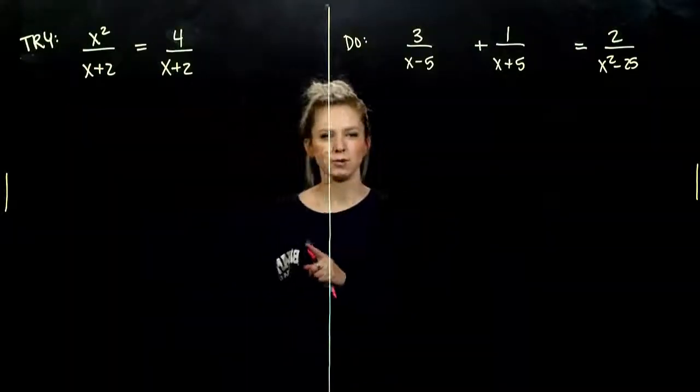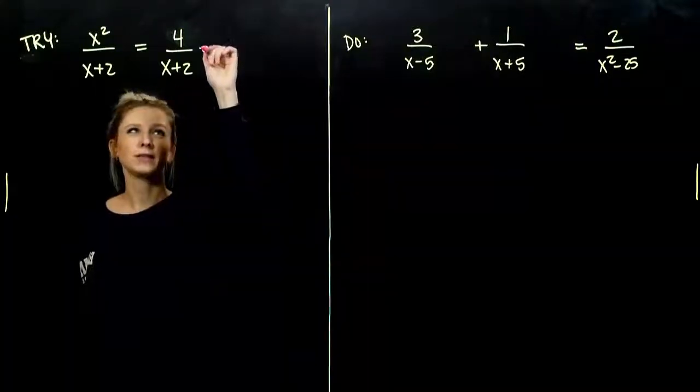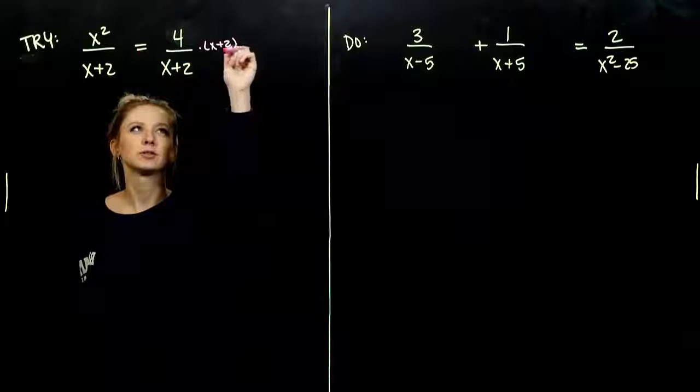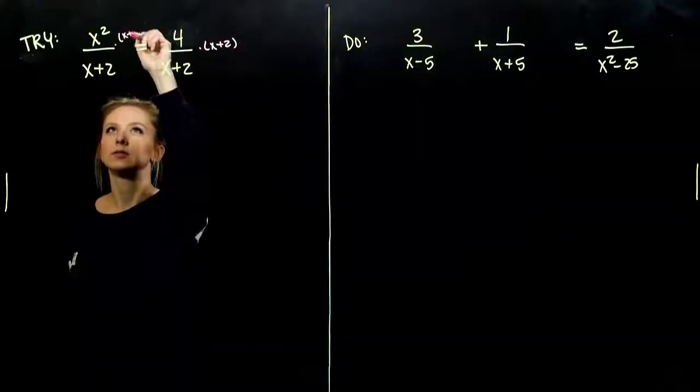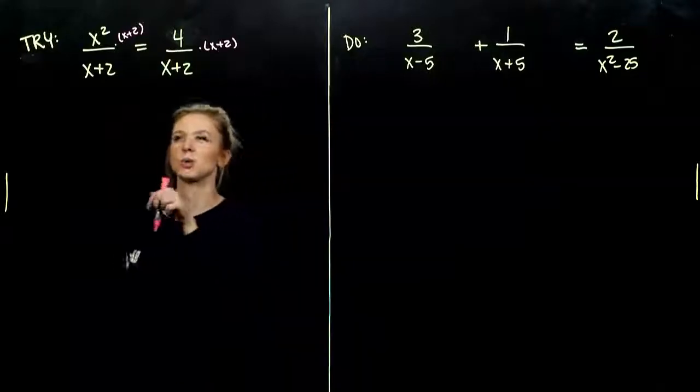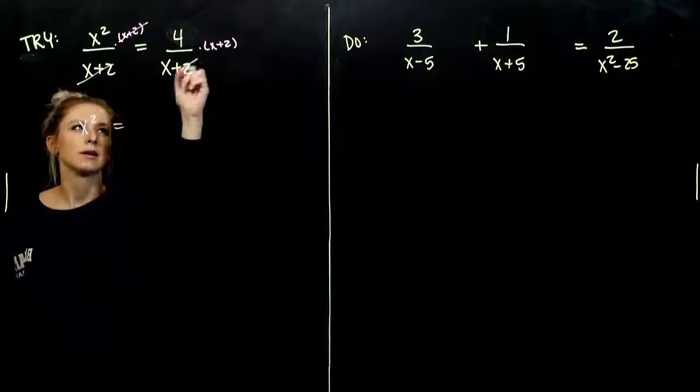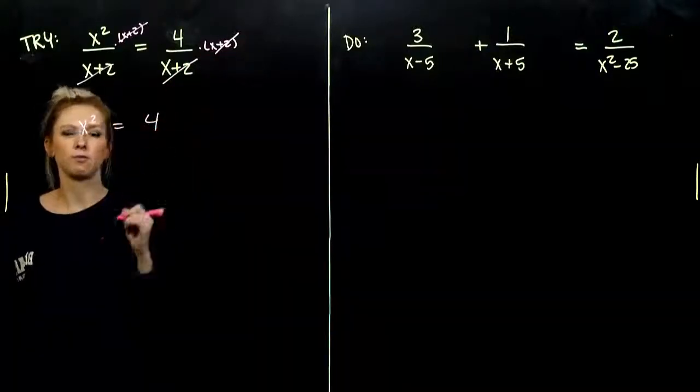So, with your try, what was the LCD between those two fractions? Everything that's down below, x plus 2, and x plus 2. So, when we multiply both sides of our equation by that value, what do we get up? On the left, we had x squared. On the right, we had 4.